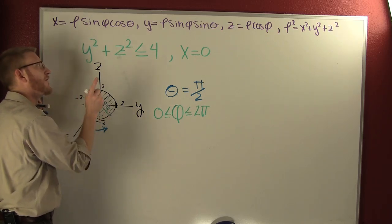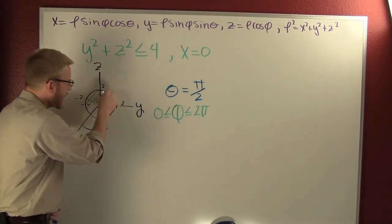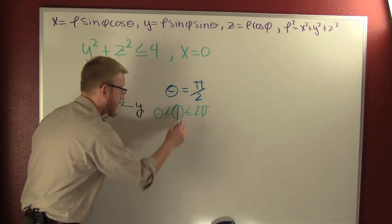Rho can be anything between 0 and 2. So that's our restrictions on rho.